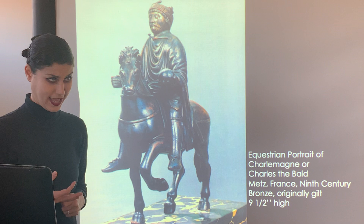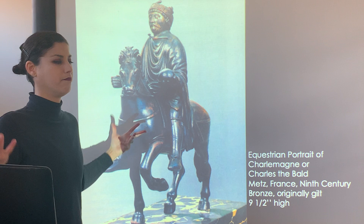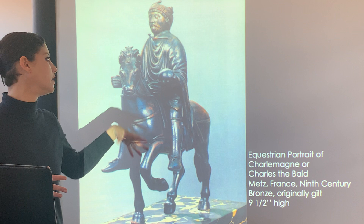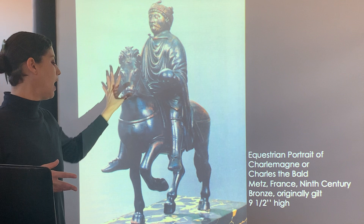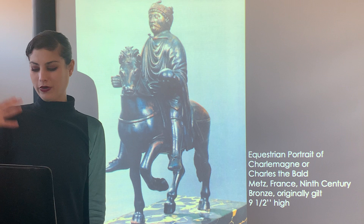Of course, as a medieval king, Charlemagne needed to portray his power with an equestrian portrait. We see a bronze statue that was originally gilt — meaning it had gold leaf on it — and we can see his medieval regalia.